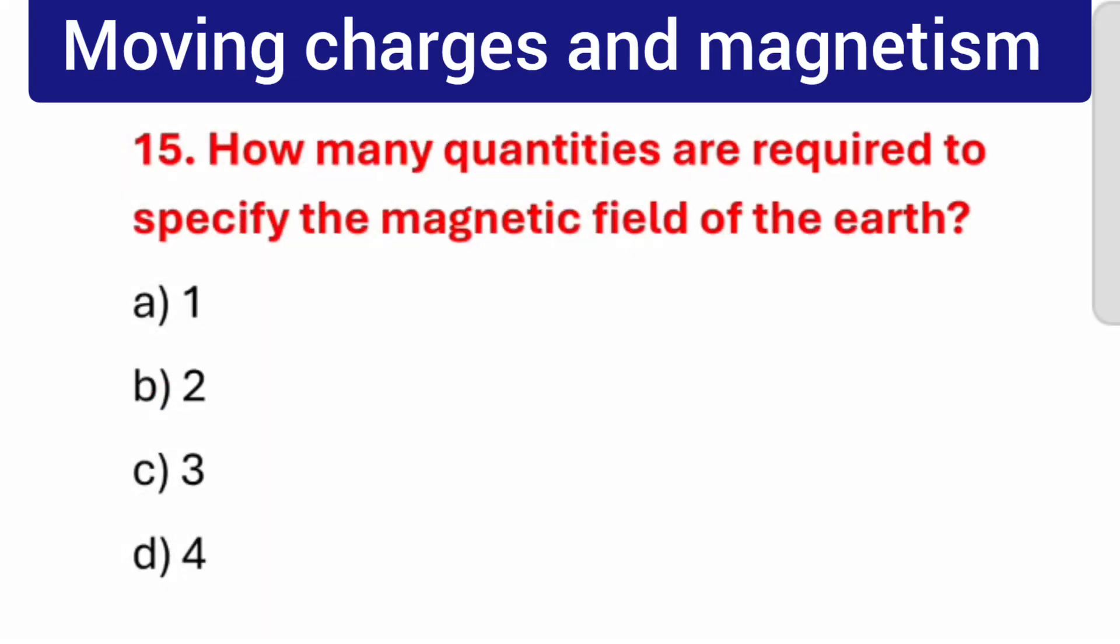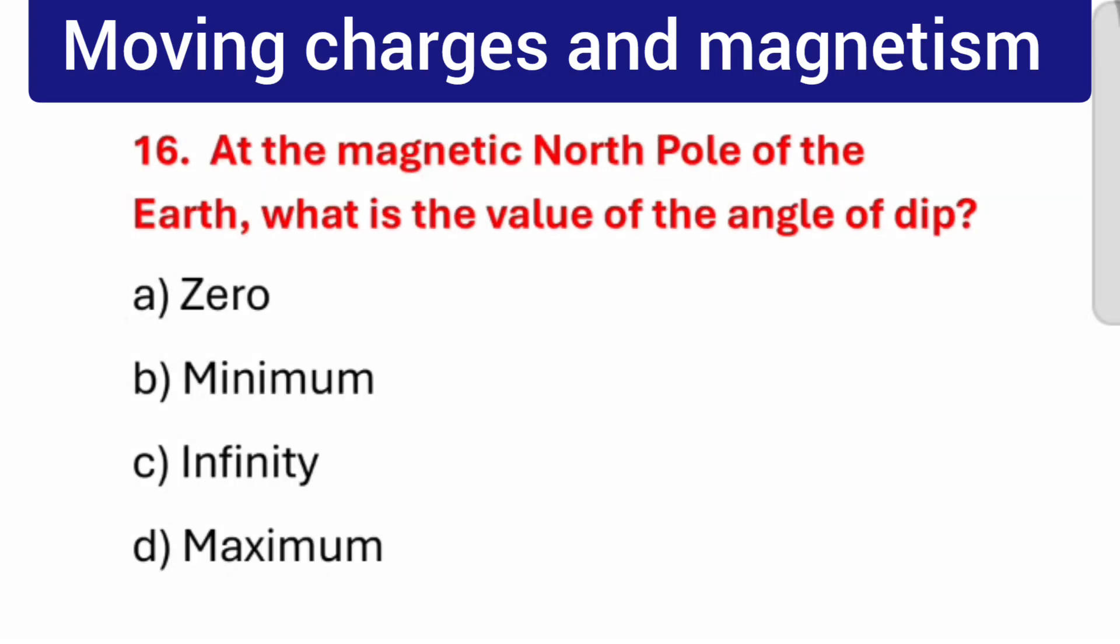Question number 15: How many quantities are required to specify the magnetic field of the earth? The correct answer is 3. Question number 16: At the magnetic north pole of the earth, what is the value of the angle of dip? The correct answer is Maximum.